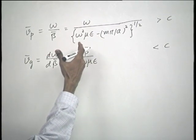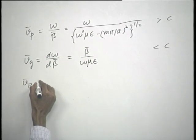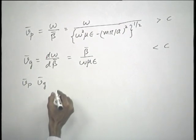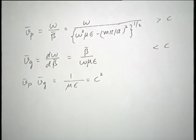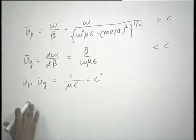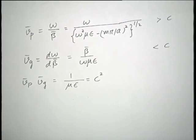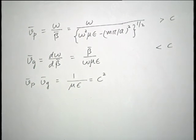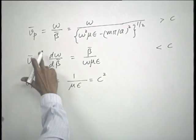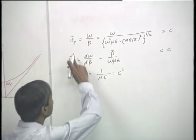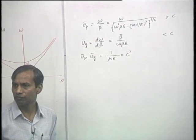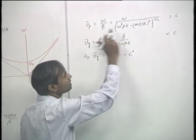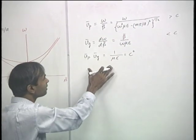Since V-p-bar equals omega over beta-bar, the product of V-p and V-g equals 1 over mu-epsilon, or the square of the velocity of light in the medium filling the parallel plane waveguide. This is a fairly general expression that holds for all metal waveguides — the parallel plane waveguide, the rectangular waveguide, or even circular waveguide. However, it does not hold for waveguides where the phase velocity is less than the velocity of light, which are called slow waveguides. For fast waveguides, where phase velocity is greater than the velocity of light, this expression holds good.